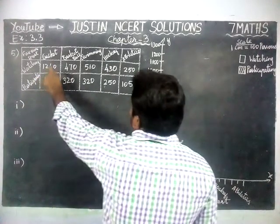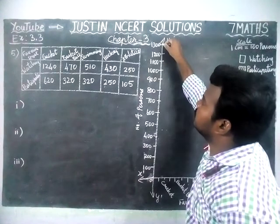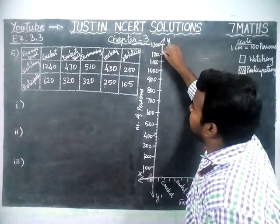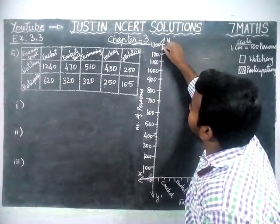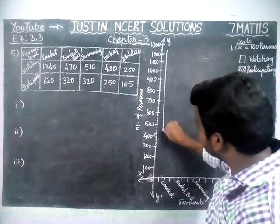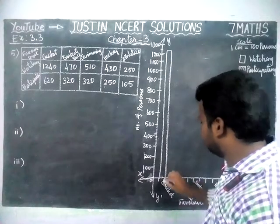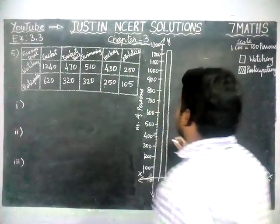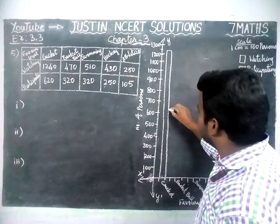For cricket, watching number is 1240. Counting up 100, 200 up to that — after 1200, in between 1200 and 1300, the first line is 1210, second is 1220, then 1230, 1240. So the point before the middle line is 1240, and we draw the bar up to 1240. Next, participating members is only 620. After 600: 610, 620 — the second small line is 620. So we draw up to 620. To show the differentiation, we cross the participating bar.